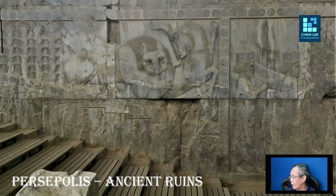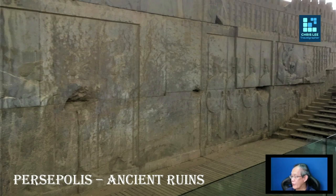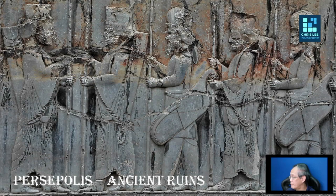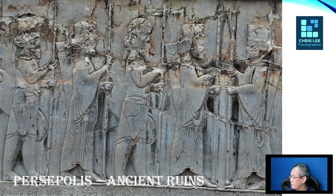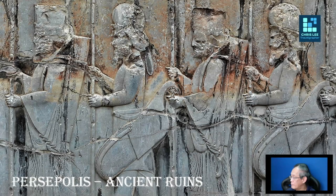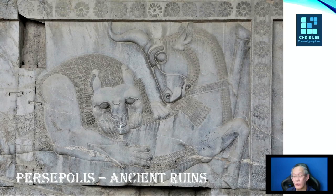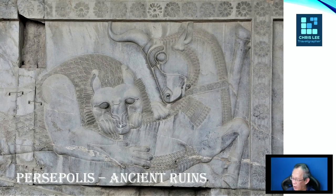This is what can be found under the shade — all the stone reliefs. You notice it's actually stairways leading up to a higher platform. As usual, you will always find these two animals in most of the tourist spots — a cow or cattle-like animal, as well as a lion-like animal. And always, the lion-like animal is attacking and killing the cattle-like animal.